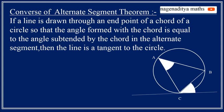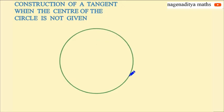So both angles are equal. So basing on this concept we are going to draw a tangent to a circle.